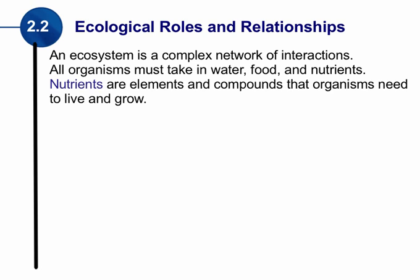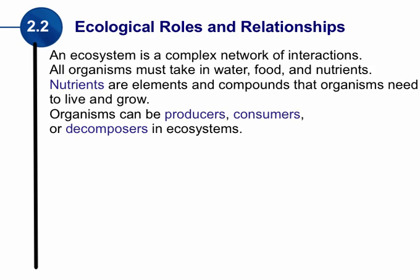Whenever we talk about organisms, think about humans — think about ourselves. We need nutrients to grow, to live, to get bigger, to get stronger. When talking about organisms — things that are living — we can categorize them into three different categories: they are either going to be a producer, a consumer, or a decomposer in the ecosystem. We're going to look at those roles in a little more detail.